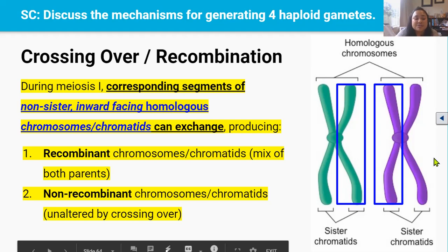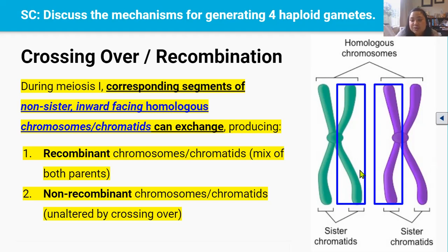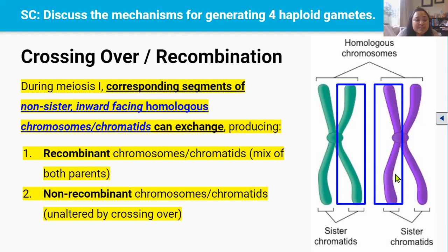What do we mean by non-sister, inward-facing homologous chromatids? Looking at this picture, non-sister inward-facing homologous chromatids are the two chromatids indicated by this box. They're non-sister chromatids because they are not identical — one chromosome comes from mum and the other from dad. They are inward-facing, meaning they are the inside chromatids. They're homologous because they're the same length, have the same centromere location, and would have the same banding patterns if stained. They contain the same genes, but not identical alleles, because mum would probably look different to dad.